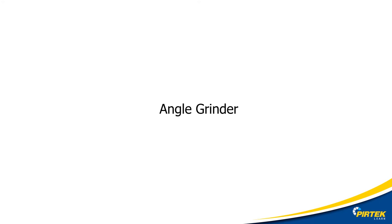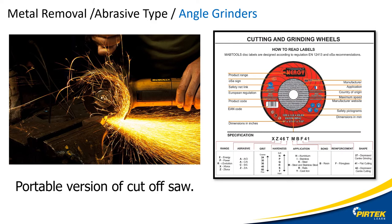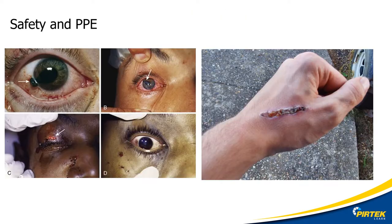The angle grinder is the portable relative of the cut-off saw. Angle grinders come in a large variety of sizes and can be electric mains- or battery-powered, or pneumatic. As with the cut-off saw, wheel selection is critical to getting the job done safely and efficiently. Angle grinders are dangerous and can cause serious and life-threatening injuries. Always use appropriate PPE and ensure the angle grinder is in good condition before using it. Remember: tag, isolate and report any faulty power tools.